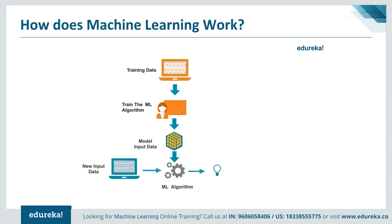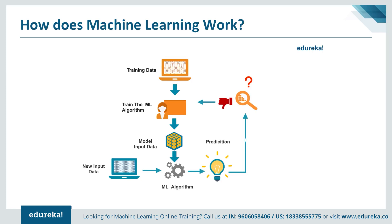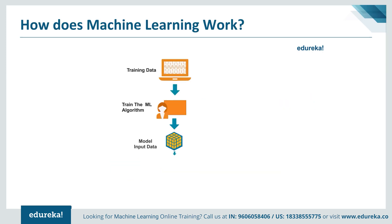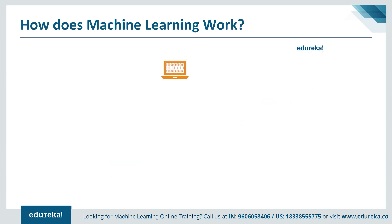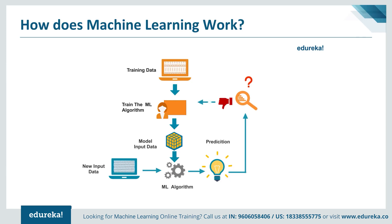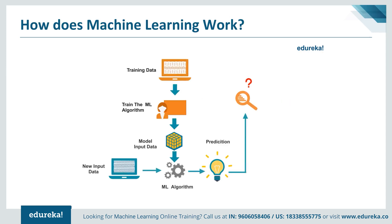Let's see in general how machine learning works. One approach is where the machine learning algorithm is trained using a labeled or unlabeled training data set to produce a model. New input data is introduced to the algorithm and it makes predictions based on the model. The prediction is evaluated for accuracy, and if the accuracy is acceptable, the algorithm is deployed. If the accuracy is not acceptable, the algorithm is trained again with an augmented training data set. This is just a high-level example, as there are many more factors and steps involved.